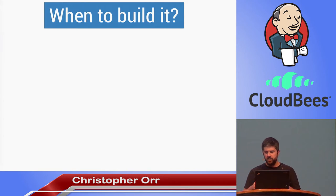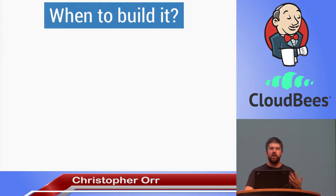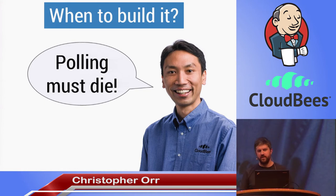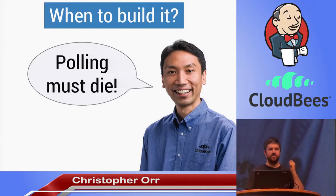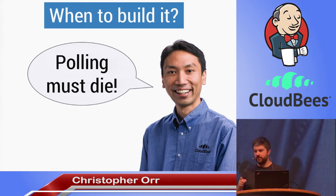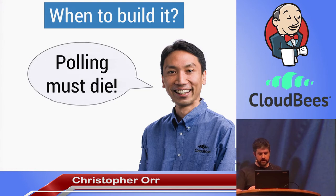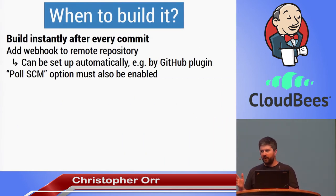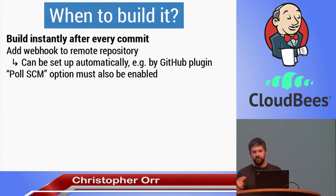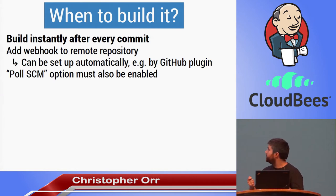Now that we've told Jenkins what we want to build, the question is when to build it. As a very wise man once said, polling must die. You should not have Jenkins configured to ask the Git repository every minute whether there's a new change. For a long time now, it's been built in that you can get your repository to tell Jenkins there's a new change. So rather than having this delay, instead of checking every minute or every five minutes, you can see instantly and get fast feedback that there's been a change and start your build.